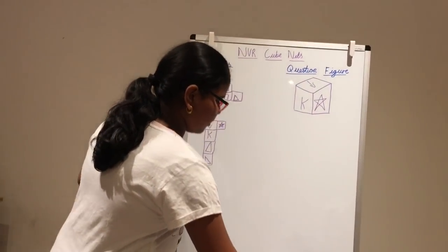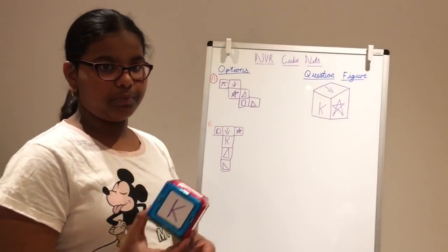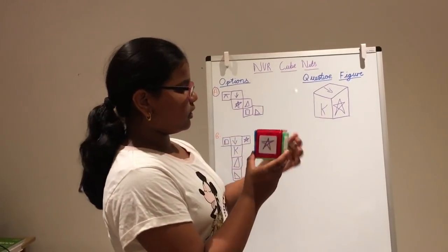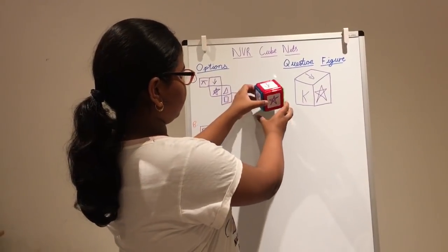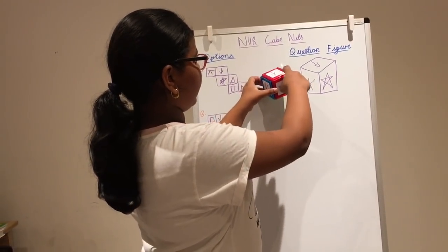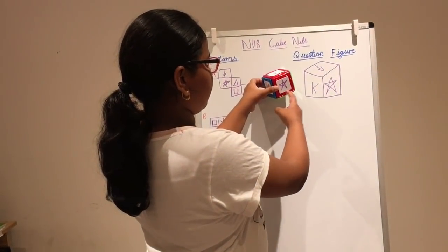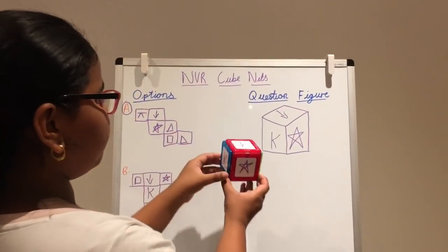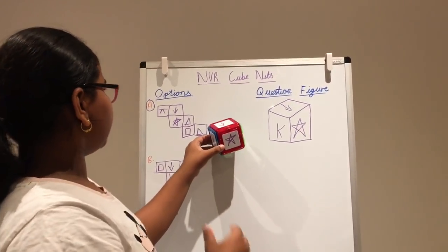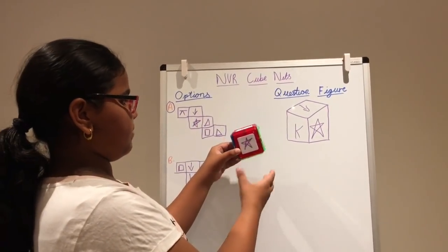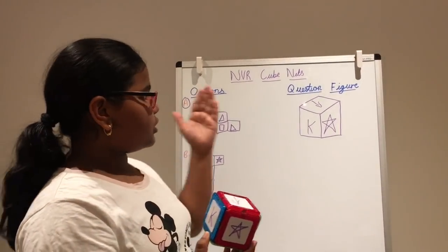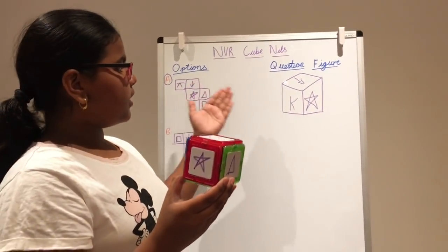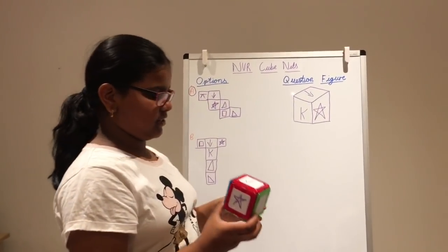Now, let's see with our cube, which I've made. Now, let's put our arrow facing up, like there, and then, now, our arrow is facing to the star, like on the question figure, and then, the K is right beside the arrow. So, we know that the option A is the correct answer, because I folded option A to be this cube. So, according to this cube, our option A is the correct answer.